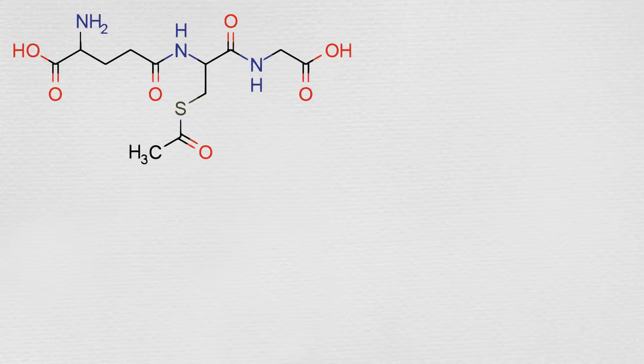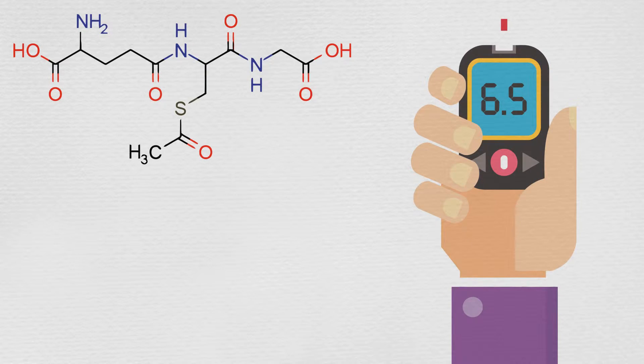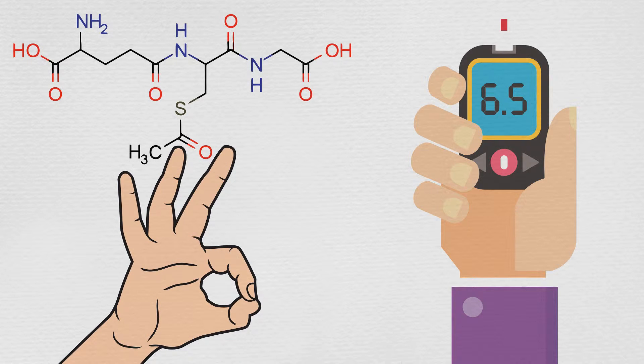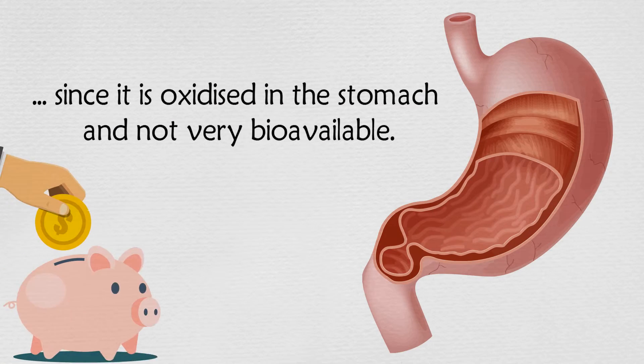Taking S-acetylglutathione is also an excellent way to get protection from the negative effects of elevated blood glucose. It works really well. Taking regular glutathione is not effective since it is oxidized in the stomach and not very bioavailable, don't waste your money.